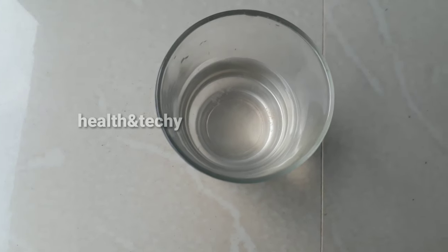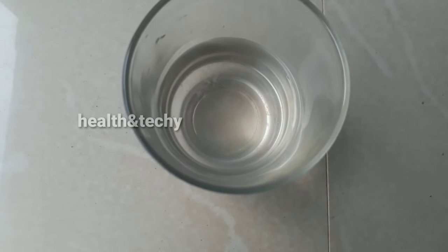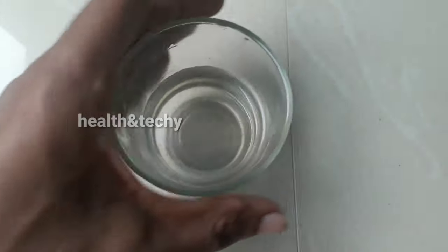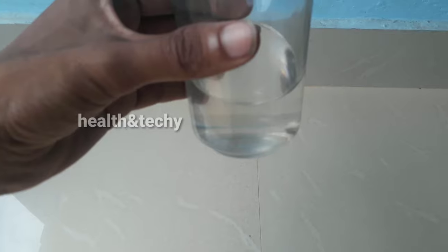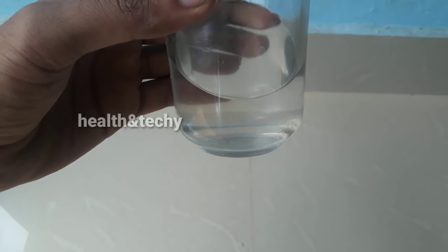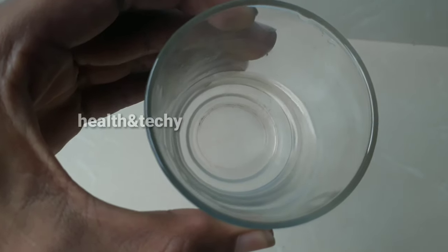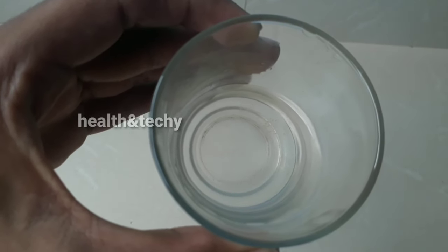First of all, you have to take a few moinas—that is the starting culture. I have taken about 10 to 20 moinas in this glass tumbler. It is very difficult to see them because they are very, very small. I don't know whether you are able to see them. You can see some moinas at the corner; they are moving constantly.